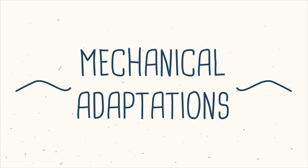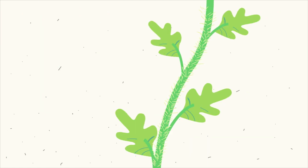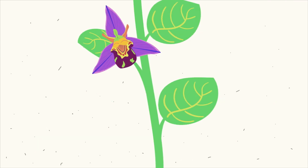There may be mechanical adaptations, such as thorns and hairs, or leaves which droop or curl when touched, or mimicry to trick animals.